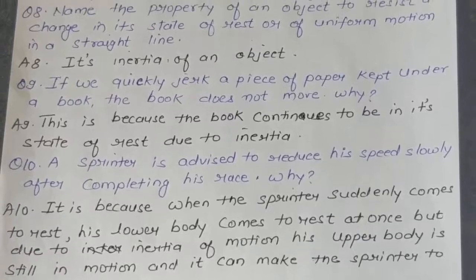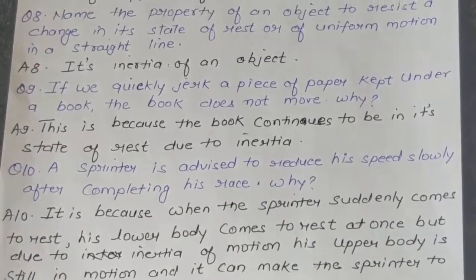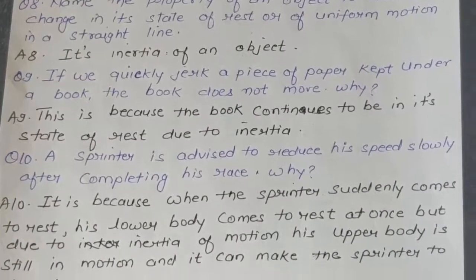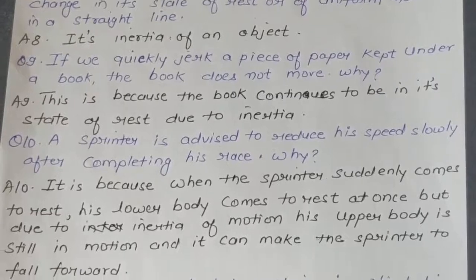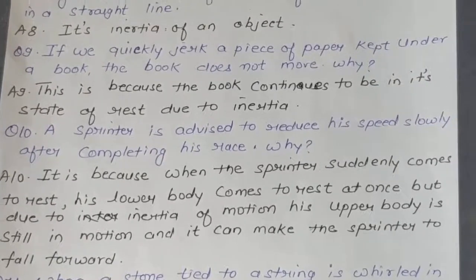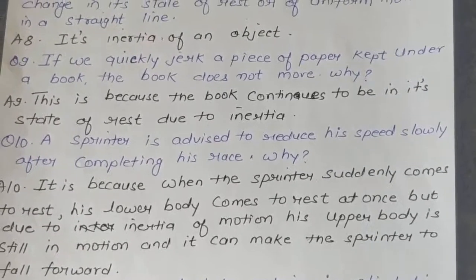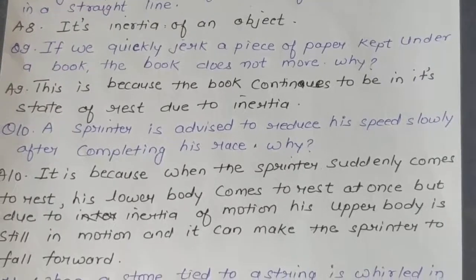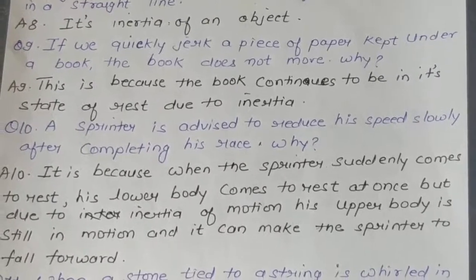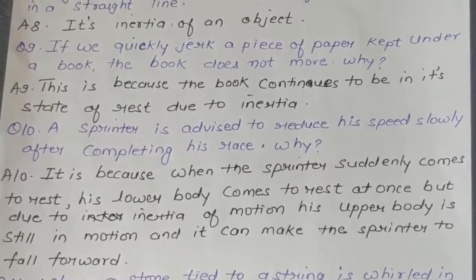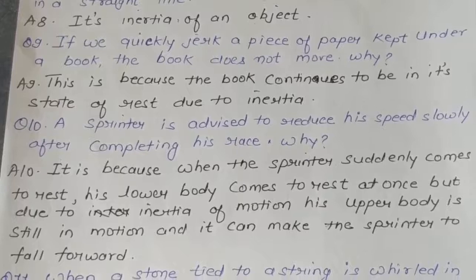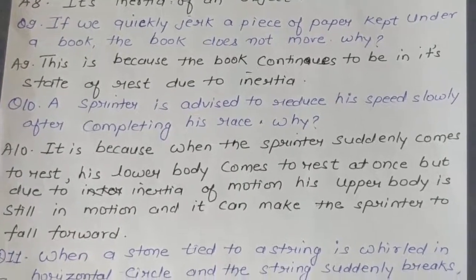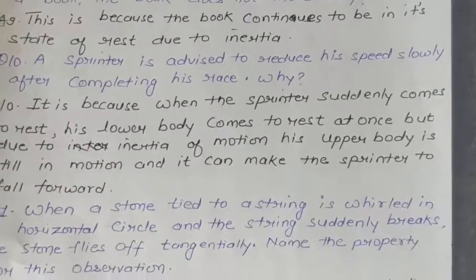Question 10: A sprinter is advised to reduce speed slowly after completing his race. Why? Answer: When the sprinter suddenly comes to rest, his lower body comes to rest at once, but due to inertia of motion his upper body is still in motion, and it can make the sprinter fall forward.